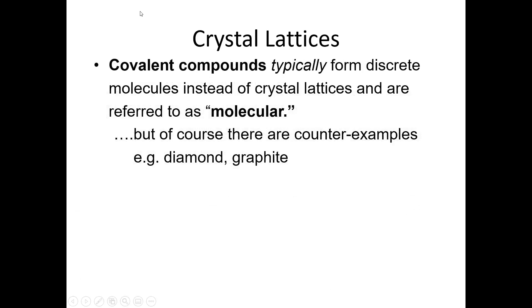Covalent compounds form discrete individual molecules instead of crystal lattices like ionic salts and metals. Every combination of atoms forms one individual molecule that exists by itself. There are exceptions like diamond and graphite, which we would call network solids — those are more like crystal lattices — but for the purpose of this course, we're focusing on covalent compounds forming individual molecules.